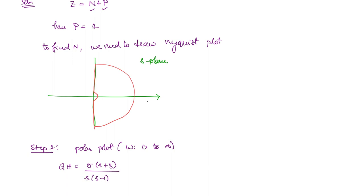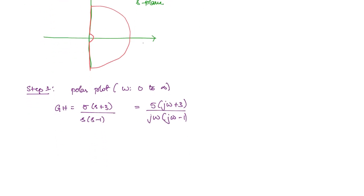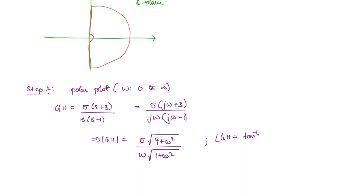Substitute s = jω to get 5(jω+3) divided by jω(jω−1). The magnitude of GH is given by 5 times root(9+ω²) divided by ω times root(1+ω²). The phase is given by tan⁻¹(ω/3) minus 90 degrees minus (180 − tan⁻¹ω). We write (180 − tan⁻¹ω) because the real part is negative. When the real part is negative, the phase is written as 180 minus tan⁻¹ of (imaginary part / real part).